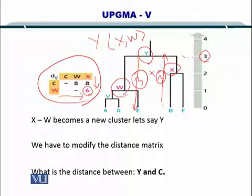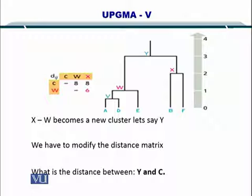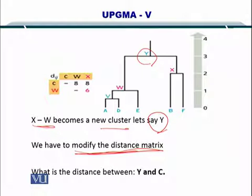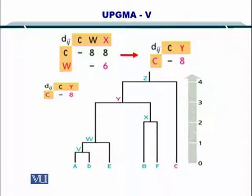So just to check, since X and W become a new cluster, let's call it Y, we have to modify the distance matrix and remove X and W. So the new cluster will be formed in Y but then we have to compute the distance between Y and C. So repeating the same exercise, X and W were removed and Y took their position and the distance between Y and C is 8.